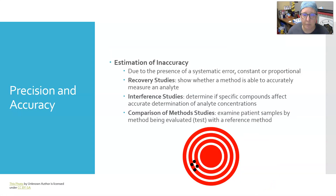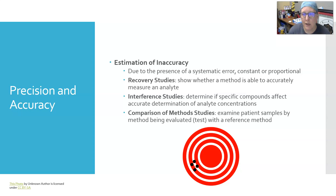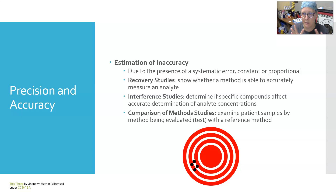Inaccuracy is due to systematic error, which can be constant — always the same amount off — or proportional, where the difference increases as the analyte concentration increases. Recovery studies show whether a method accurately measures an analyte. Interference studies determine if specific compounds affect accurate determination of analyte concentration — for example, whether hemolysis (red cell breakdown releasing hemoglobin) affects the result.